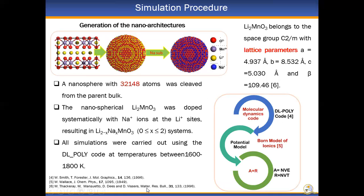We carried out molecular dynamics calculations, which are based on the bond model of ionics. For all the calculations, the DL-Poly code was used. Amorphization was carried out using the NVE ensemble and recrystallization was carried out using the NVT ensemble at temperatures between 1,600 to 1,800 Kelvin. In order to generate our models, a nanosphere consisting of 32,148 atoms was cleaved from the Li2-MnO3 parent bulk.